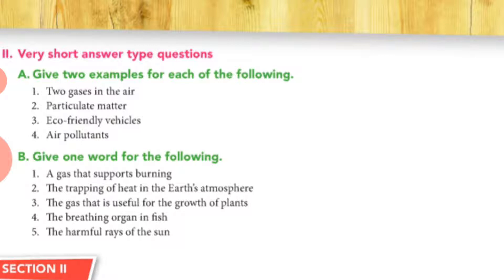Now give one word. So first one, a gas that supports burning, it is oxygen. Second, the trapping of heat in the earth's atmosphere, so it is greenhouse effect.